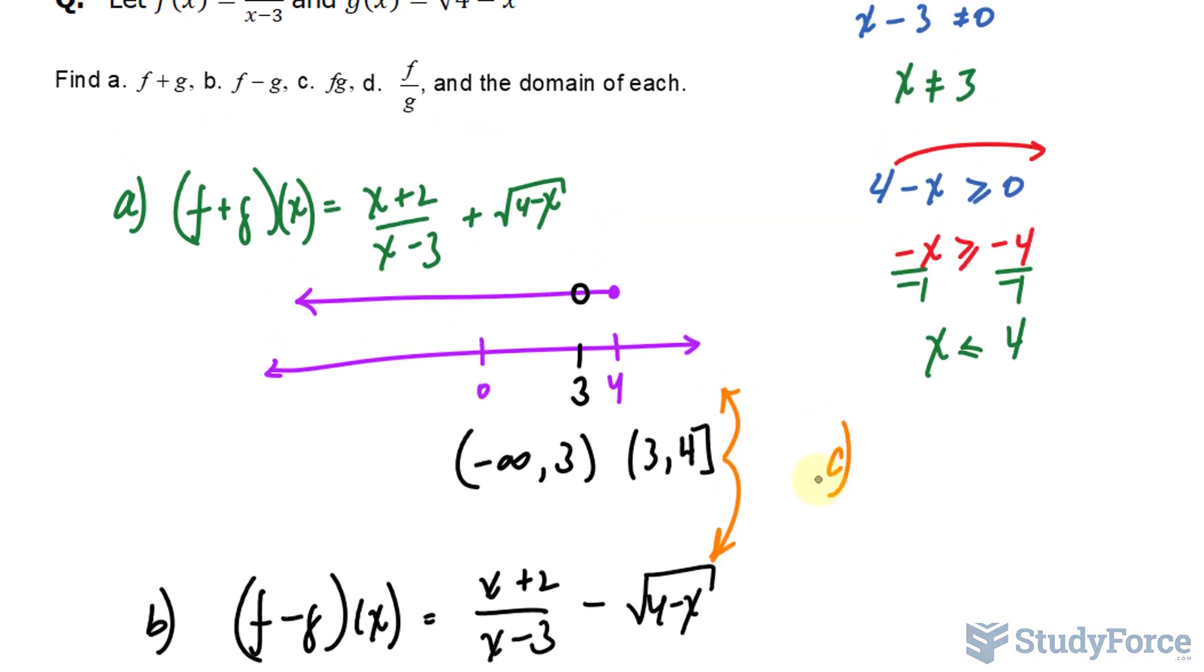Let's see if that's the case for C. In C, we are multiplying f and g. If we multiply them, we have x plus 2 over x minus 3 times the square root of 4 minus x. As before, the same condition will apply. So the domain is the same for A, B, and C.